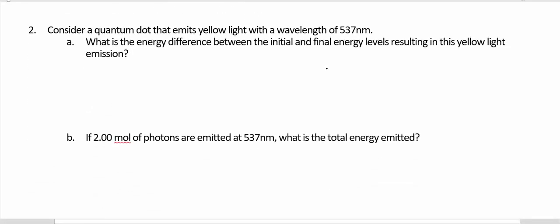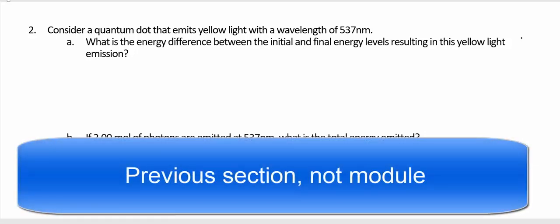Number 2, consider a quantum dot that emits yellow light with a wavelength of 537 nanometers. What is the energy difference between the initial and final energy levels resulting in this yellow light emission? Well, this is a real fancy way to say what's the energy. So we're going to use the same equations we used in the previous module.